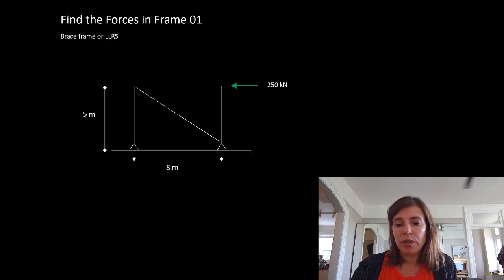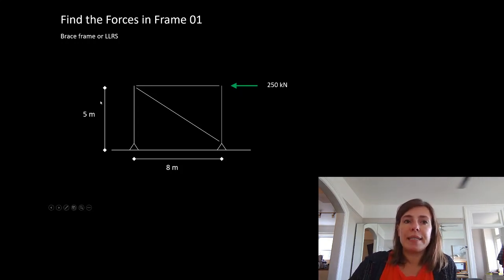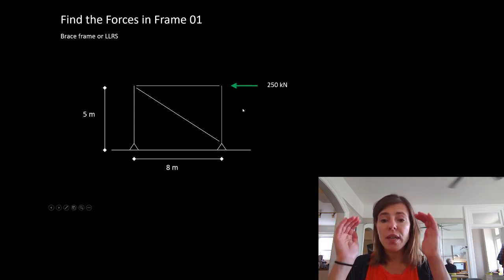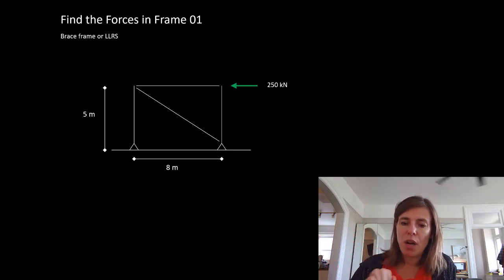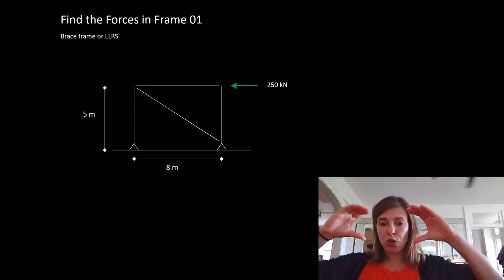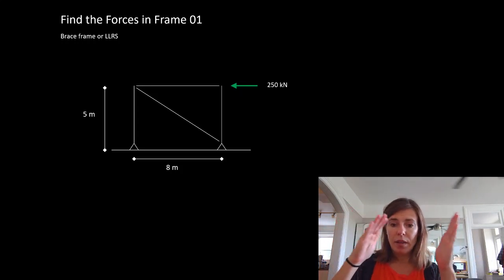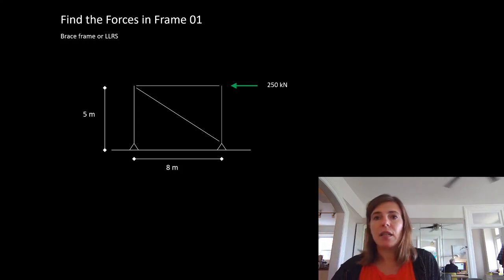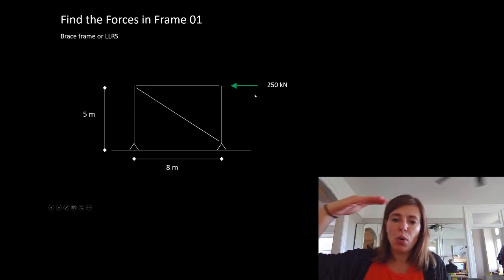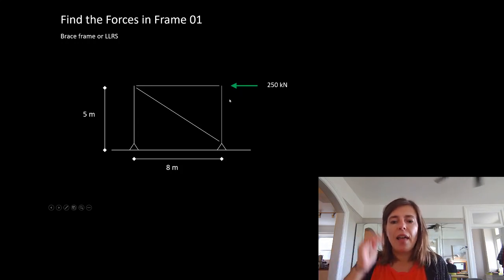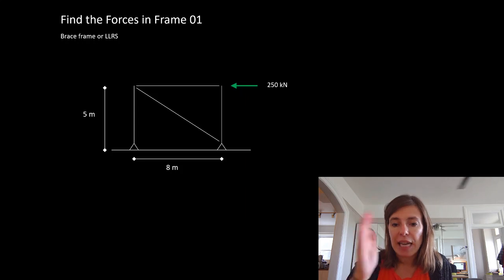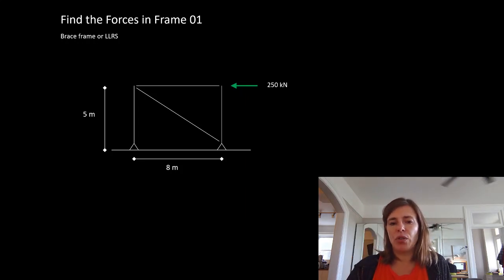In example part two, you will be able to go through that exact same process with this frame. A frame is essentially a truss — this would be a lateral load resisting system in a building. Instead of being a truss in bending, this is a frame that's trying to rack. We have some lateral load pushing on this frame in our building. Again, the first thing we would do is solve for our reactions and then start taking a series of section cuts and solving for the internal forces.